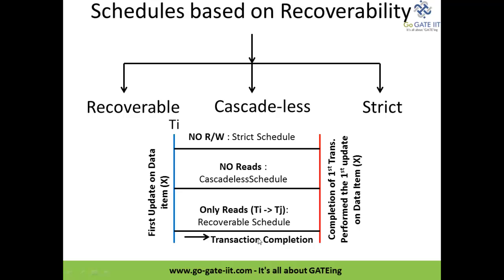This flow from left to right shows the transaction completion. Similarly, with cascadeless schedule, from the first update made on data item X till the completion of the transaction, if there are no reads but overwrite is possible, then this is called a cascadeless schedule. And finally, strict schedule: no read or write performed on the data item from the first update on X till the completion of the transaction — no read or write operation.